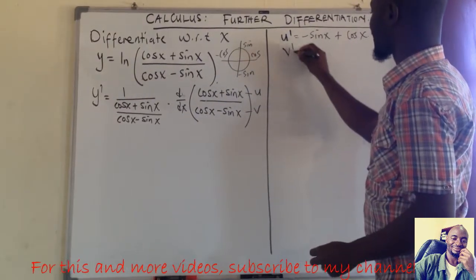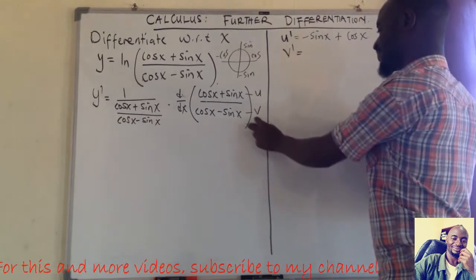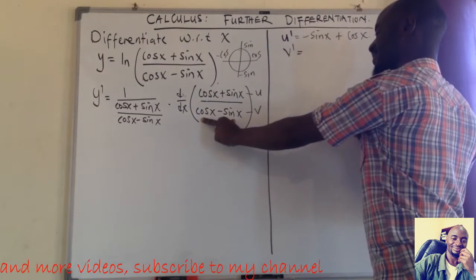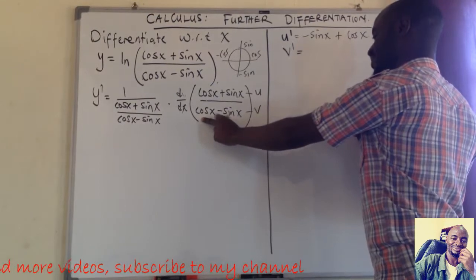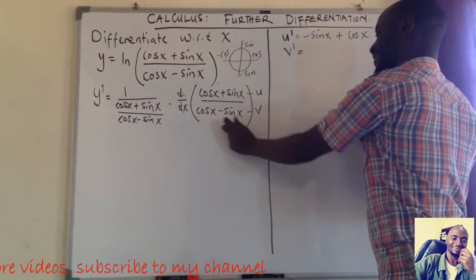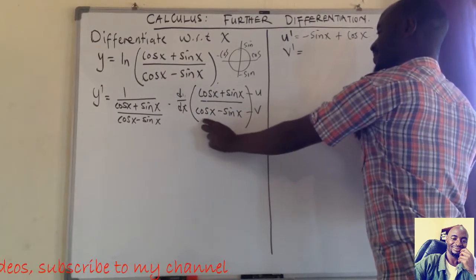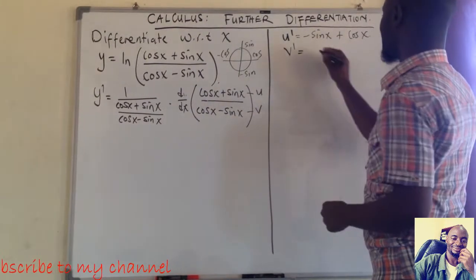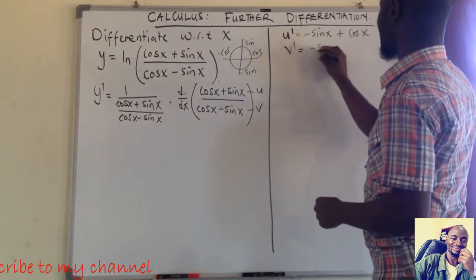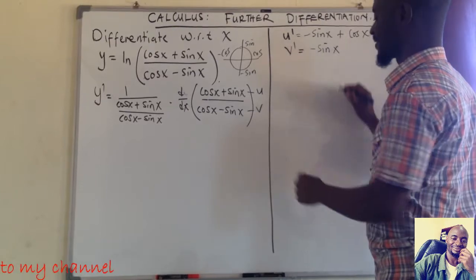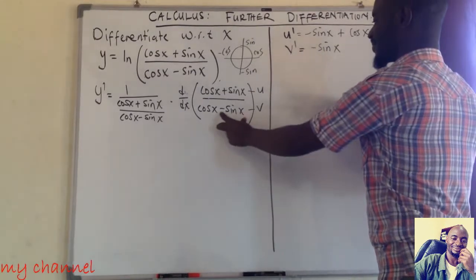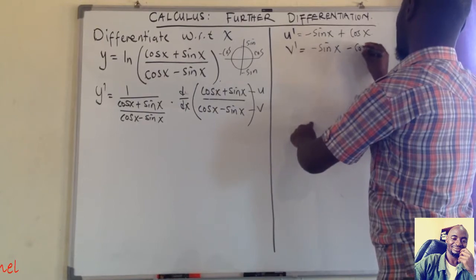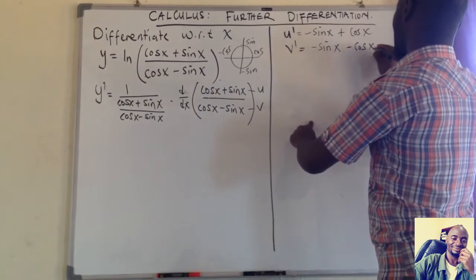Now we find the derivative of v. We differentiate v = cos x − sin x using the difference rule — differentiating each term separately. The derivative of cos x is minus sin x, and the derivative of minus sin x gives minus cos x. So v prime = minus sin x minus cos x.